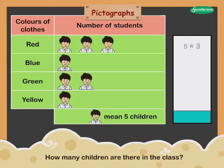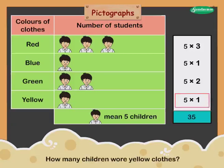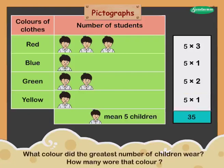A chart shows what colors were worn by children to school on the day when school uniform was not compulsory. Colors of clothes: Red, Blue, Green, Yellow. Scale: 1 child picture means 5 children. Total children in the class: 7 × 5 = 35. 5 children wore yellow clothes. The greatest number of children wore red — 3 × 5 = 15 children wore red.